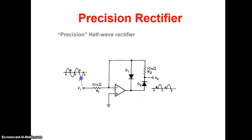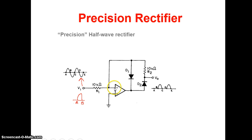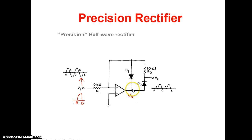Now we will see how it operates. During the positive half cycle, from point A to B, the op-amp is connected in an inverting configuration — the plus input terminal is grounded and the input is applied to the minus terminal. When a positive voltage is applied, the output VA is expected to be negative, since it is an inverting configuration.